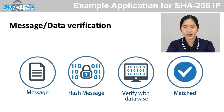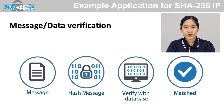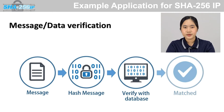Here is the example application of SHA-256 for message or data block verification. For example, if you download a file and you want to ensure that the data has not changed due to a network error, you can compare the hash of your file with the original one, which is usually provided on the website you get the data from. And if the two hash messages match, then the data file is correct.